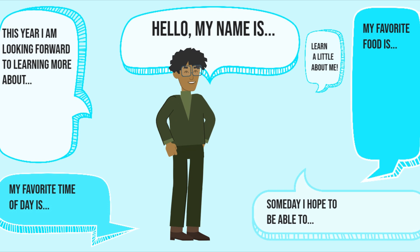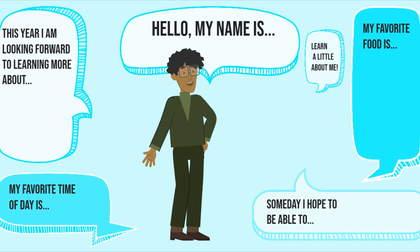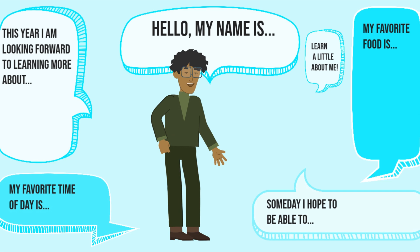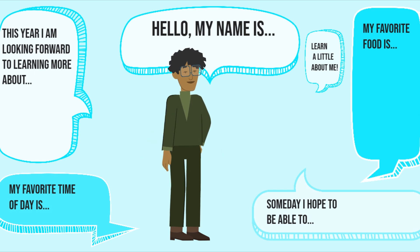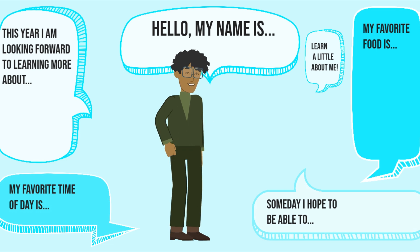Under Article 166, the Chief Minister has the power to allocate portfolios to Ministers. Under Article 167, the Chief Minister has the power to dismiss Ministers. Under Article 168, the Chief Minister is responsible for the overall administration of the State.